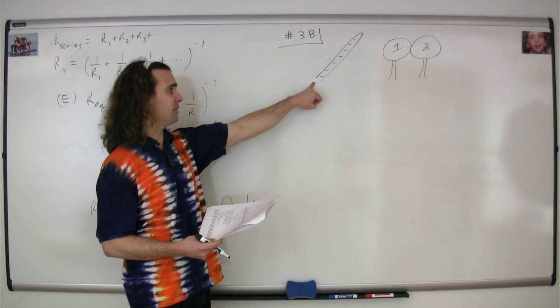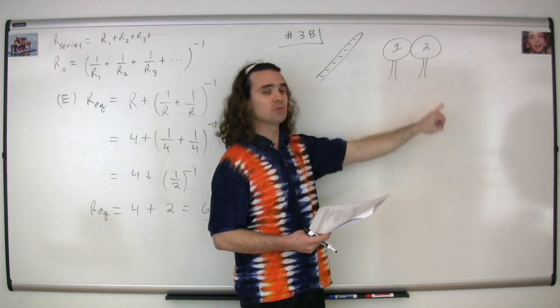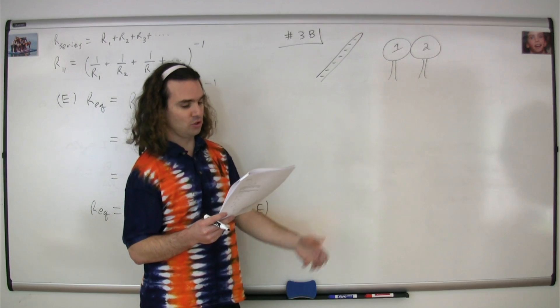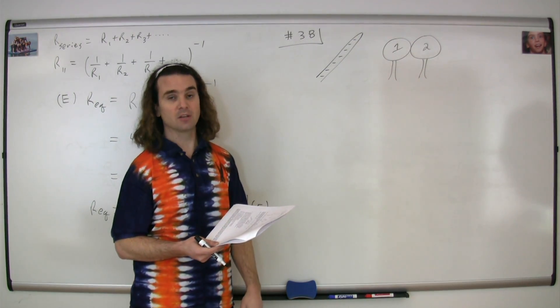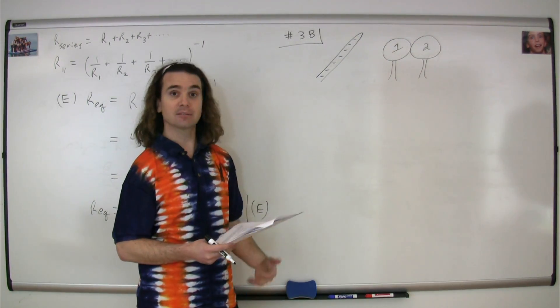So what happens here is bringing the negatively charged rod close to these two polarizes the two initially uncharged conductors. So the charges end up looking like this.